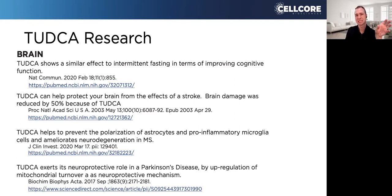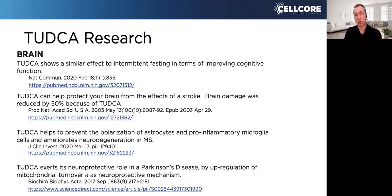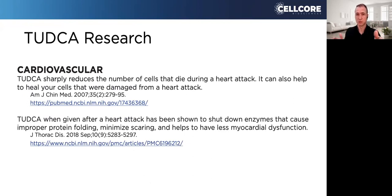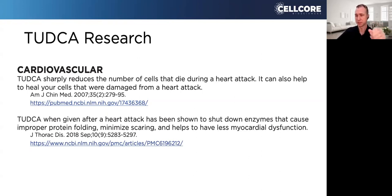Our body naturally makes TUDCA — it's a secondary bile acid made by the microbiome in the gut. But when people aren't well, the gut is compromised and there's not good bacteria, so the body doesn't make TUDCA. TUDCA is an anti-inflammatory and it actually protects the smooth endoplasmic reticulum, which is why you see research on it across cardiovascular, cancer, and liver areas. When you're not well, you're typically not making this, which is why it's such a helpful supplement.